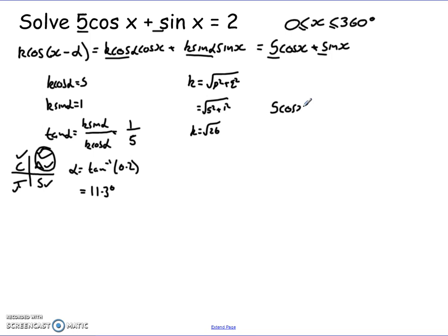So I can say fine, so 5 cos x plus sine x equals, well we're going to put it in the k cos x minus alpha form, k is root 26, so it's square root of 26 cos of x minus alpha, so x minus 11.3. So what I've done is I've taken one that's a combination of two trig functions and I've made it a singular trigonometric function. So now I can rewrite the entire equation as root 26 cos of x minus 11.3 and that equals 2.